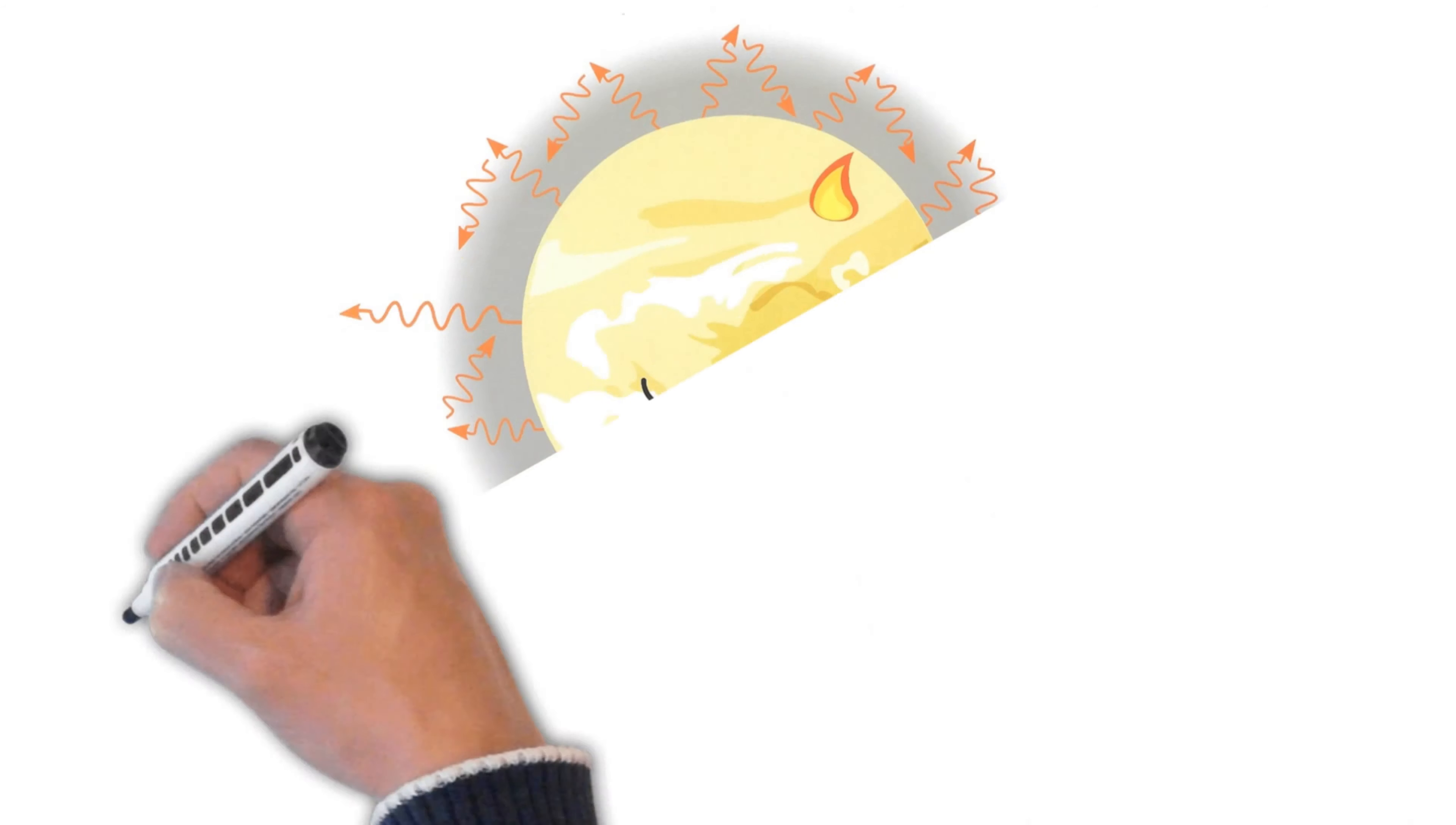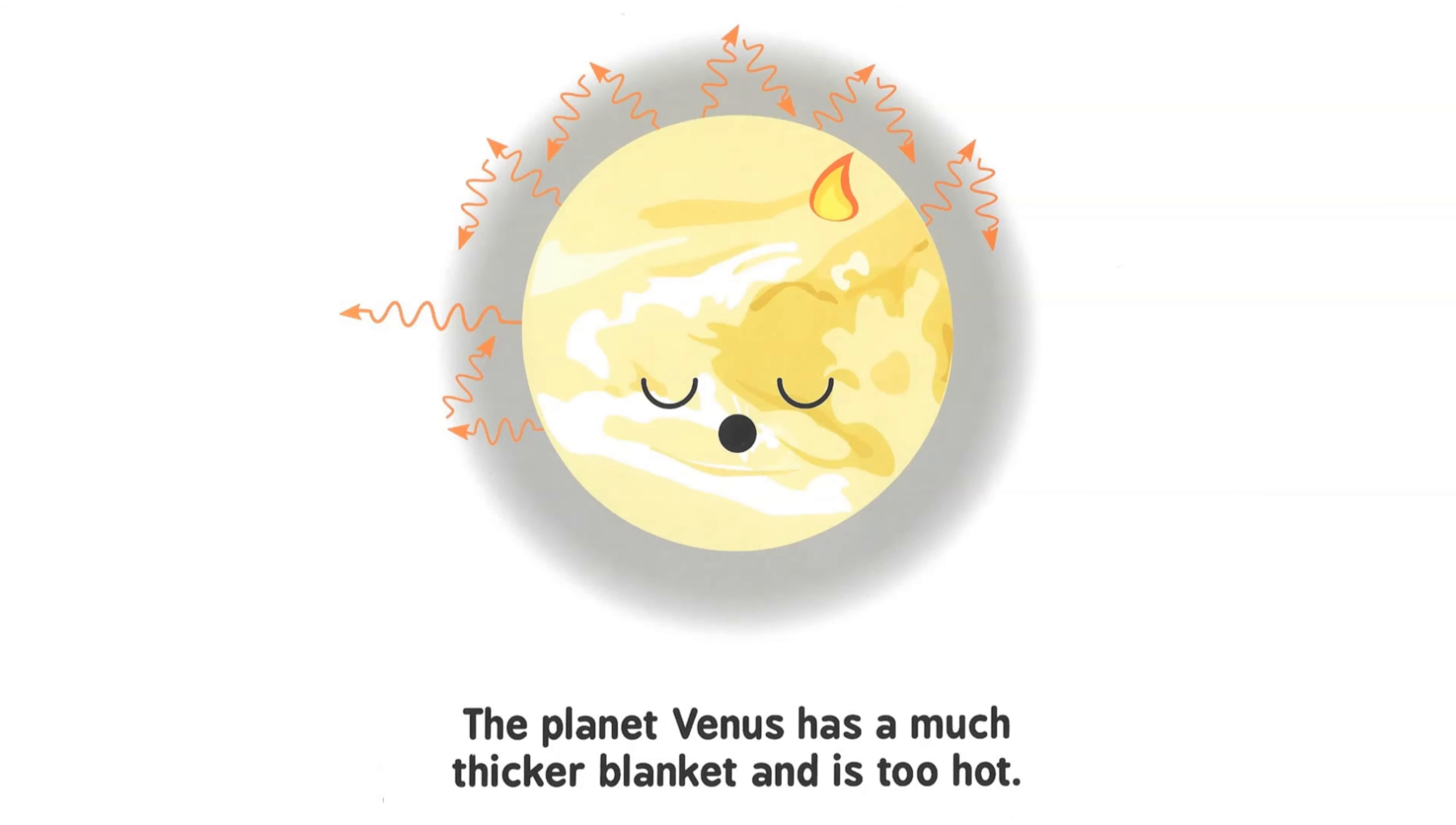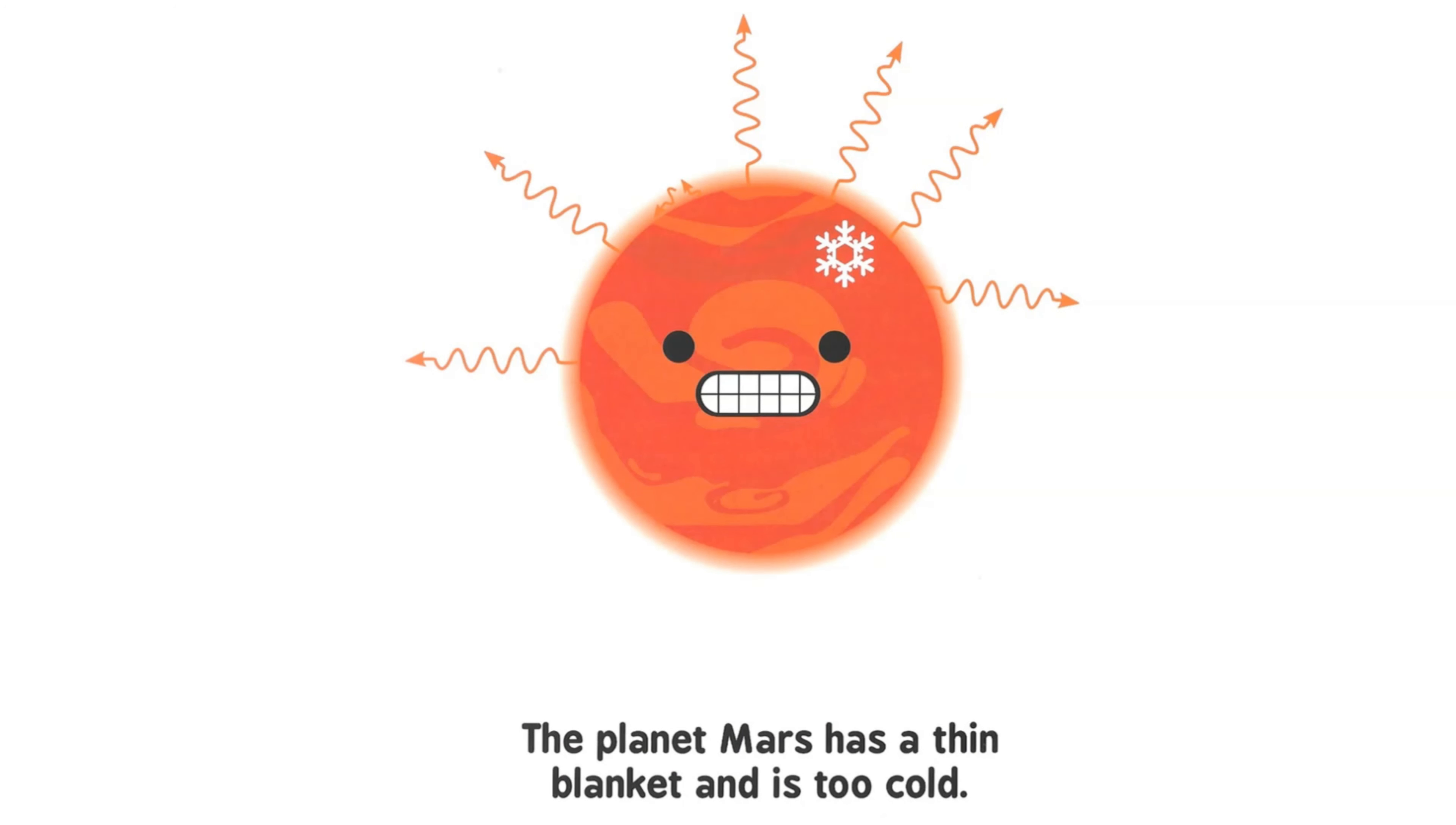The planet Venus has a much thicker blanket and is too hot. The planet Mars has a thin blanket and is too cold.